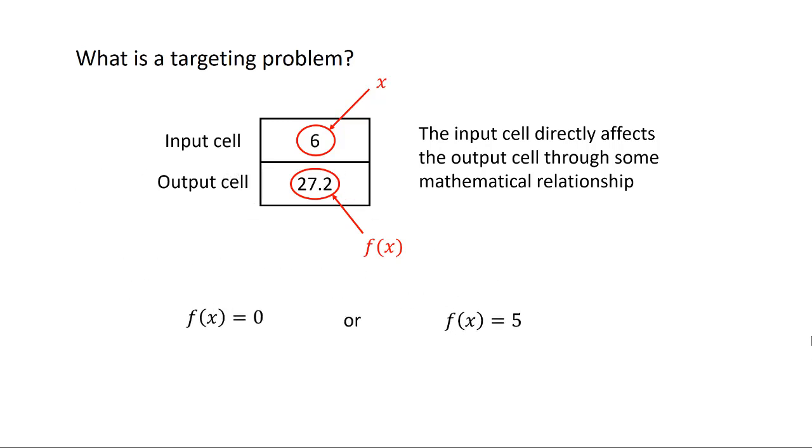Now targeting problems are when you're trying to drive f of x equal to some value. A lot of times you're trying to drive f of x to 0. And in that case you're solving for the root of an equation. But it doesn't have to be 0. You can also solve for a different target. For example, you can set that f of x equal to a value such as 5. So this is known as a targeting problem.